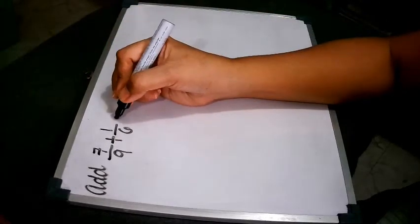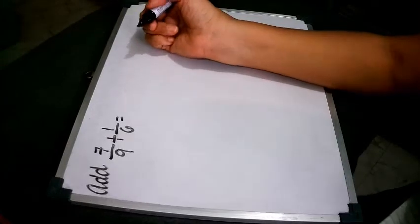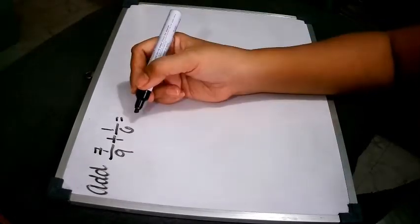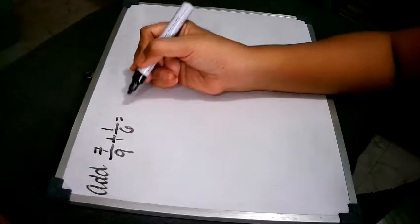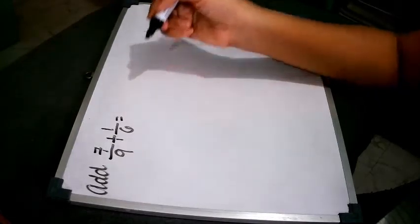To add these fractions, we have to do something. There is a step in doing this one because we cannot do it directly. In the rule, we have to make them similar first.